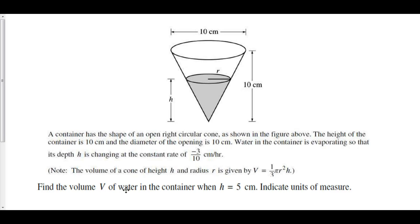Well, we want to find the volume. So the volume they've given us is v is equal to 1 third pi r squared h. Now they told us that the height at this particular moment when we want the volume is 5 cm. However, they have not given us the radius at this particular moment.